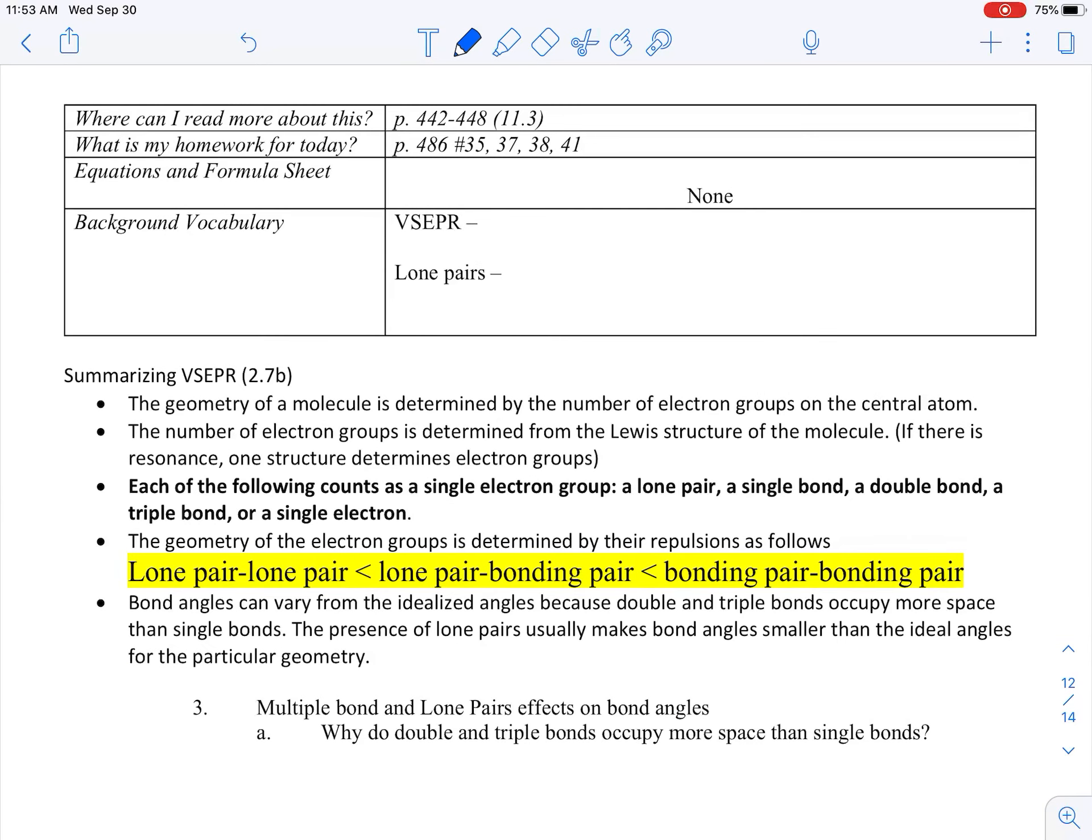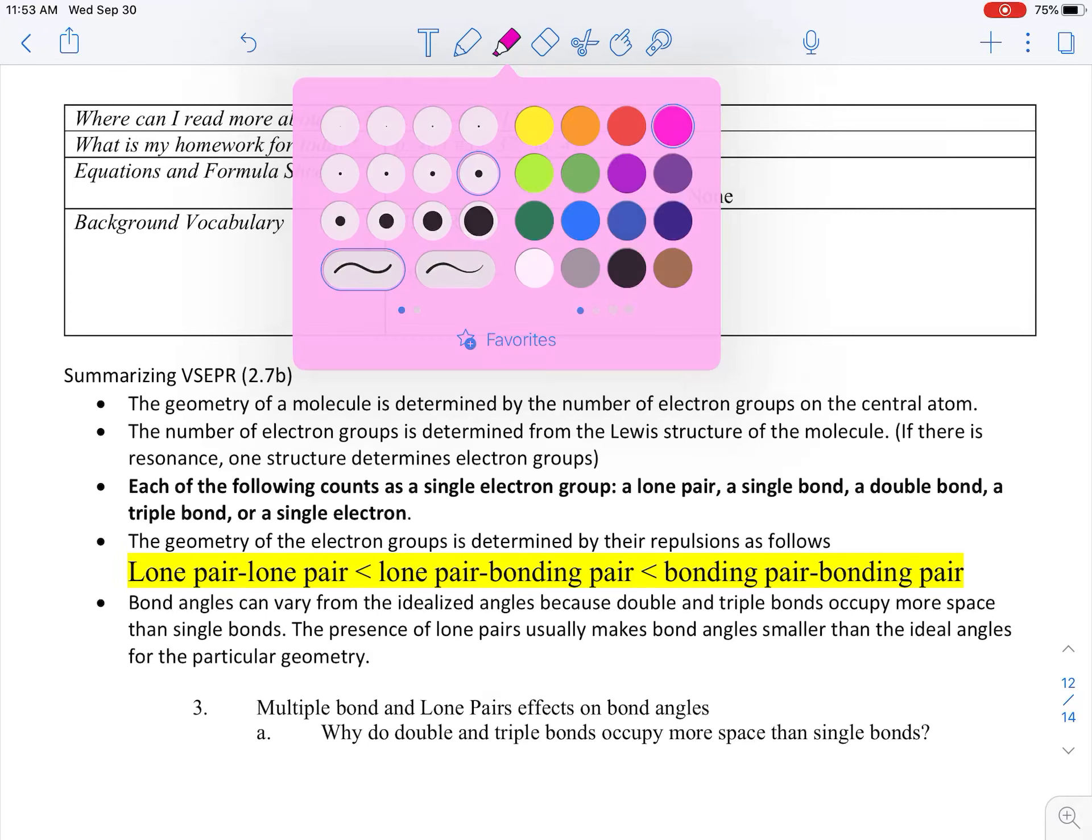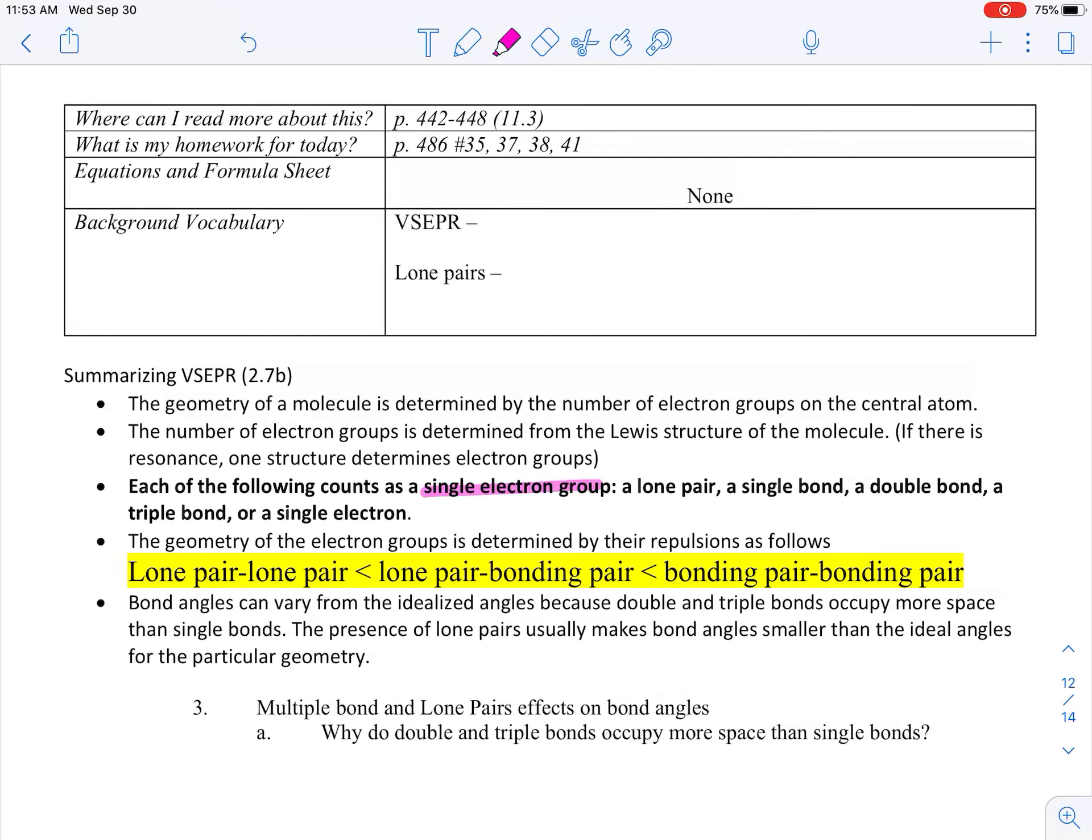So summarizing VSEPR 2.7b. The geometry of a molecule is determined by the number of electron groups, and electron groups are the ones around the central atom. A single electron group counts as a lone pair, a single bond, a double bond, a triple bond, or even a single electron. So if I have a double bond on the central atom, that's only one electron group.